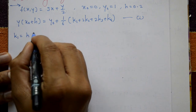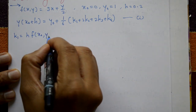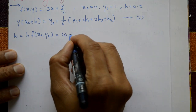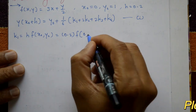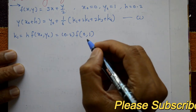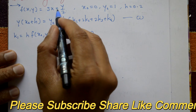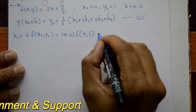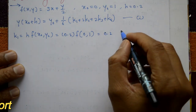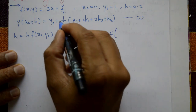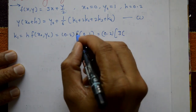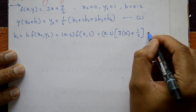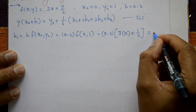First, k1 = h · f(x naught, y naught). With h = 0.2, x naught = 0, and y naught = 1, we substitute into f(x, y) = (3x + y)/2: k1 = 0.2 × (3(0) + 1)/2 = 0.2 × 0.5 = 0.1. So k1 = 0.1.